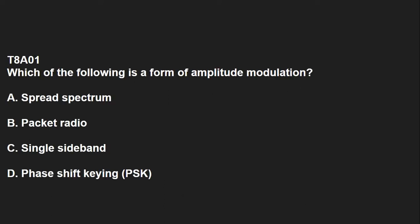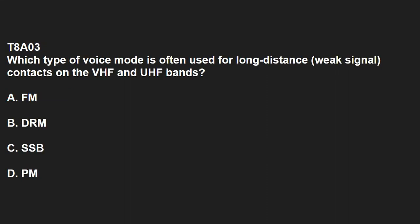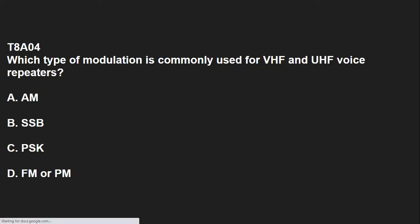T8A01: Which of the following is a form of amplitude modulation? That answer is C, Single Sideband. T8A02: What type of modulation is commonly used for VHF packet radio transmission? That answer is A, FM or PM. T8A03: Which type of voice mode is often used for long distance weak signal contacts on the VHF and UHF bands? That is C, SSB or Single Sideband. T8A04: Which type of modulation is commonly used for VHF and UHF voice repeaters? That answer is D, FM or PM.